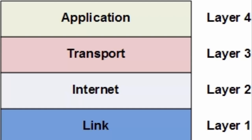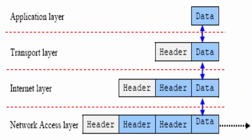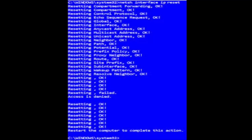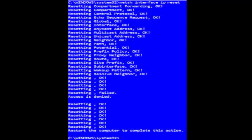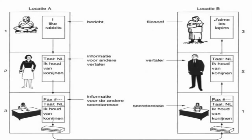TCP/IP requires little central management and it is designed to make networks reliable, with the ability to recover automatically from the failure of any device on the network. The two main protocols in the internet protocol suite serve specific functions. TCP applications can create channels of communication across the network, and it also manages how a message is assembled into smaller packets.